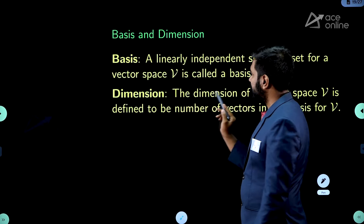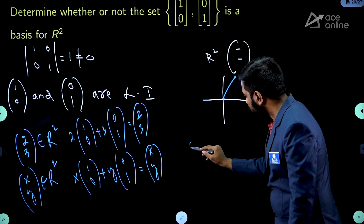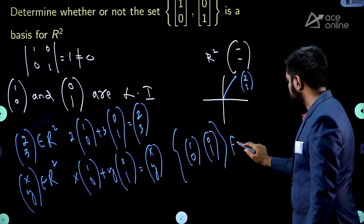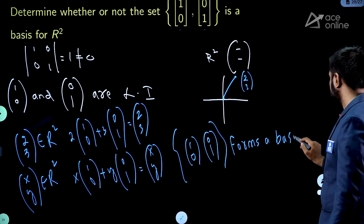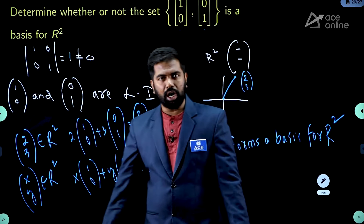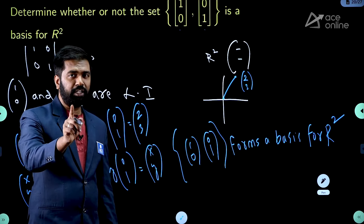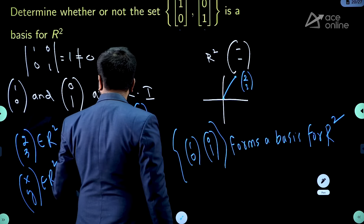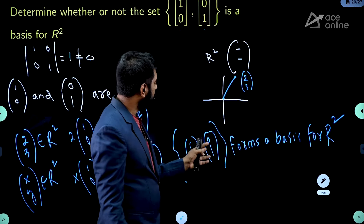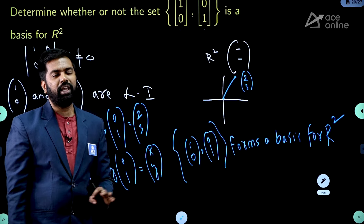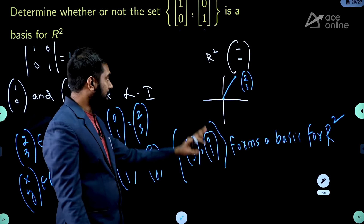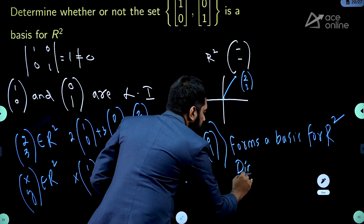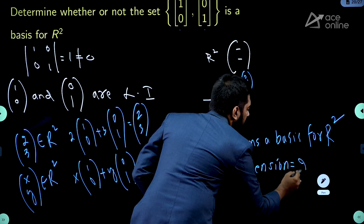A linearly independent spanning set for vector space V is called a basis. So {(1,0), (0,1)}, a set containing two vectors, forms a basis for R². I verified: one, they are independent — checked by determinant. Two, they are spanning R² — I verified with vector (2,3) and arbitrarily with (x,y). The linear combination covers entire R². Hence this forms a basis. The dimension of R² is simply 2 — the number of vectors in the basis.